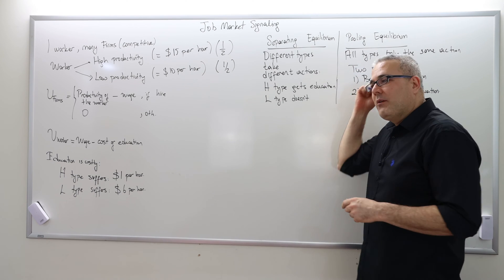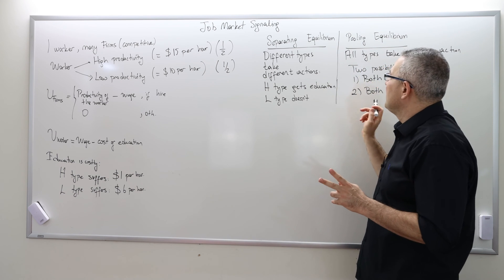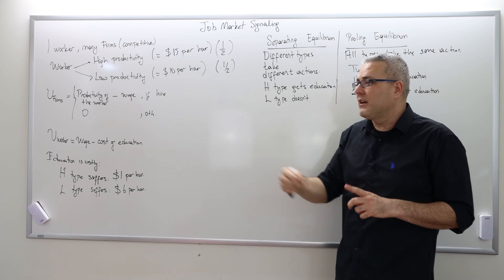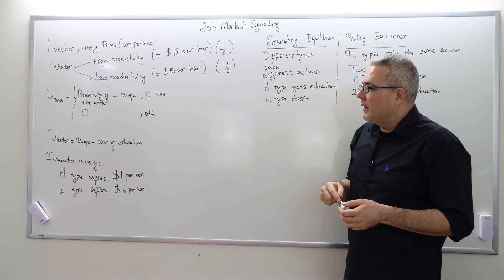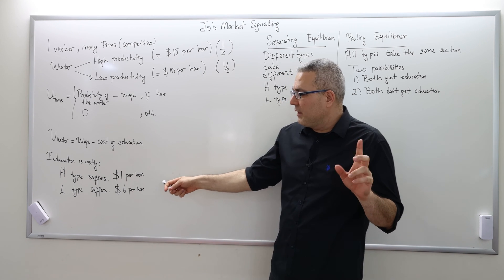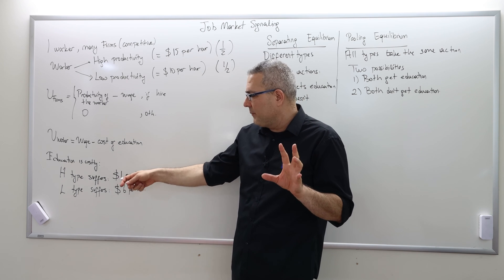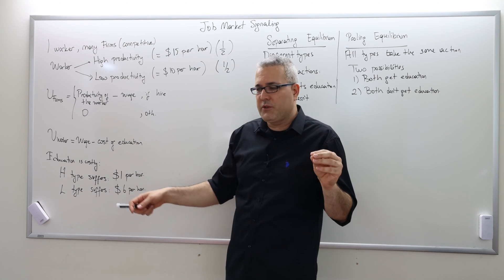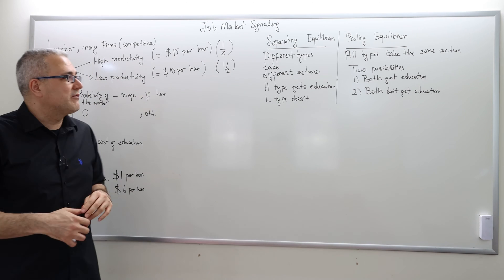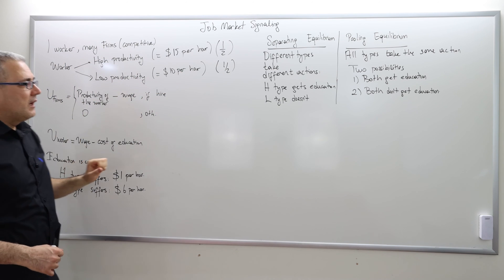In this video I'm going to talk about separating equilibrium. If I can finish it in five or seven minutes I'll continue with pooling equilibrium towards the end, otherwise I'll make another video for it. I also forgot again — in the previous video I couldn't remember the notion for the assumption where the high type's cost of education is lower than the low type's cost of education. We call this the single crossing property.